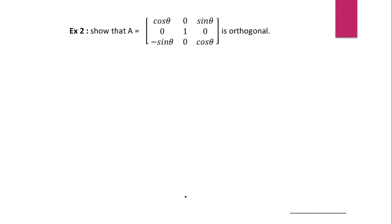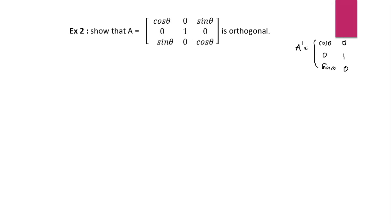Now the second example: show that A equals the matrix with first row cos theta, 0, sin theta; second row 0, 1, 0; third row minus sin theta, 0, cos theta is an orthogonal matrix. The transpose of this matrix is obtained by writing rows as columns: first column becomes cos theta, 0, sin theta; second column 0, 1, 0; and third column minus sin theta, 0, cos theta.